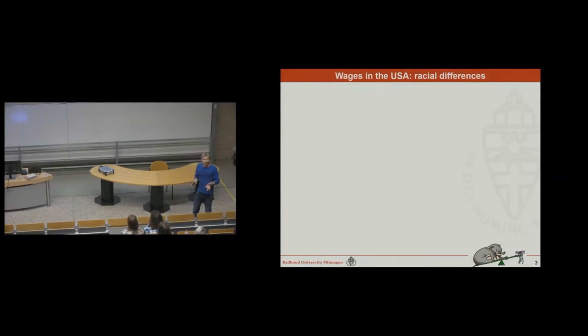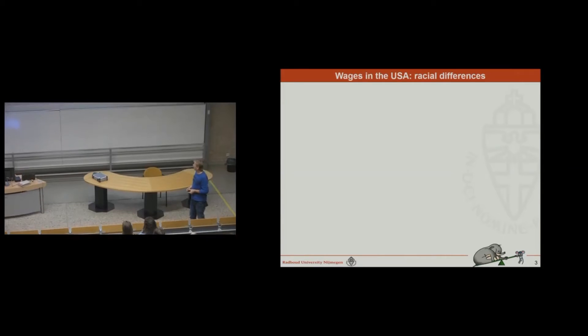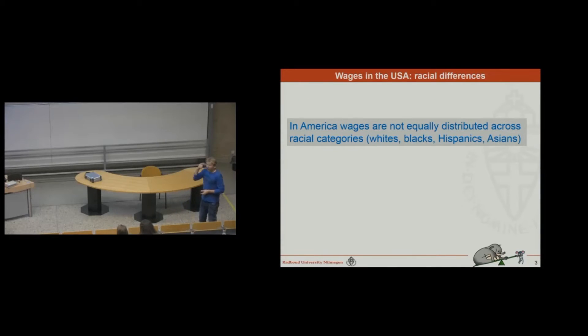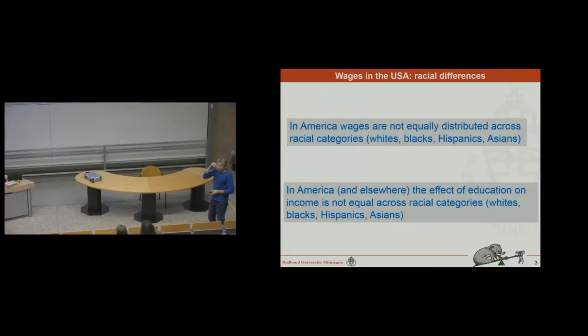To explain to you what Weighted Effect Coding is all about, I use an example from the United States, and we used the wages in the United States. And we have two research questions we'd like to answer today. First research question is, in America, the wages are not equally distributed across the four important racial categories: whites, blacks, Hispanics, and Asians. Research question number two is that the effect of education on income is not equal across racial categories. So, we know that if you have a higher education, your income will be higher as well. That's no secret. But it might be that for a higher educated white American, the income may be higher than someone who is black and has the same educational level. So, we like to investigate whether that is the case.